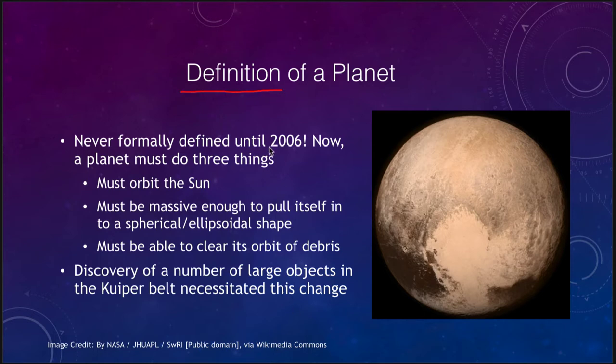Until 2006 there was never a formal definition of a planet — it was simply what we said it was, with nothing specific defined. So let's look at what that definition became. There were three things that had to be met for an object to be classified as a planet.